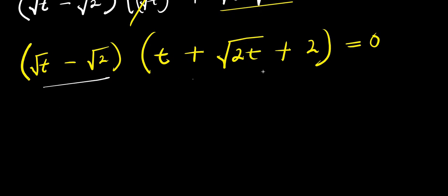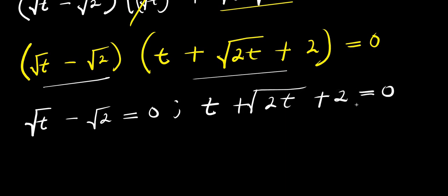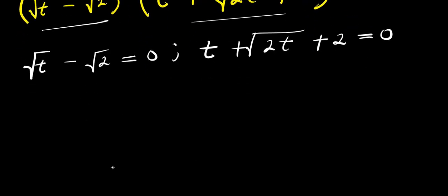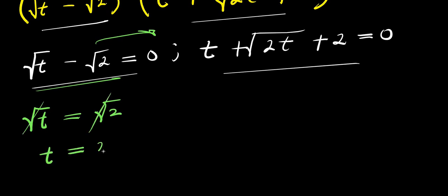From here we can equate each factor to zero. First factor: square root of t minus square root of 2 equals 0. Moving root 2 over, we have root t equals root 2, and squaring both sides gives t equals 2.